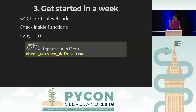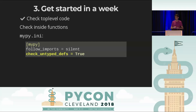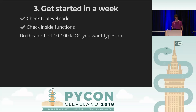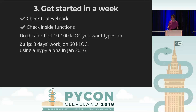Then check inside functions using the option called 'check_untyped_defs'. This tells MyPy to check not only the top level but even inside function definitions where you haven't added annotations yet. It acts like a smarter PyFlakes — a linter with a solid understanding of Python semantics. At this stage you'll get some errors, probably some real bugs, maybe in exception handling paths, and some cases where you need to declare the type of an empty collection. When Zulip adopted static types, these two steps took about three days on a 60,000-line code base.